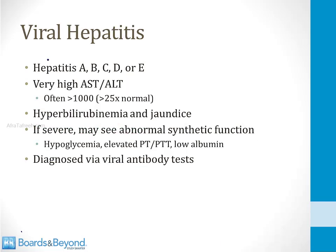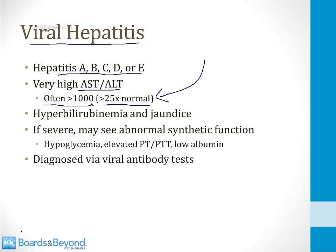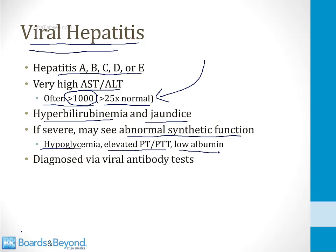In the infectious disease section, I talk about viral hepatitis in detail; I'll just briefly review here. There are five hepatitis viruses that infect the liver — hepatitis A, B, C, D, and E. They all cause a marked increase in the AST and ALT level in the serum. A normal AST or ALT level is about 50; in viral hepatitis, these levels can get over 1,000 — more than 25 times normal. When you see liver function tests in the thousands, it's only one of a couple of things, and viral hepatitis is one of them. Patients can develop hyperbilirubinemia and jaundice. If severe, you can see abnormal synthetic function — hypoglycemia, abnormal coagulation tests, and low albumin. Viral hepatitis is diagnosed by viral antibody tests.